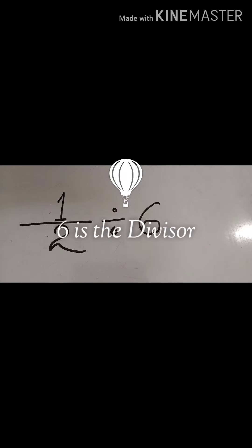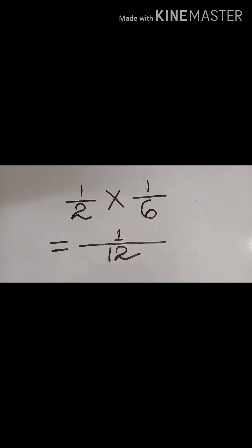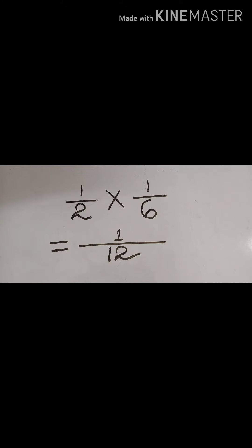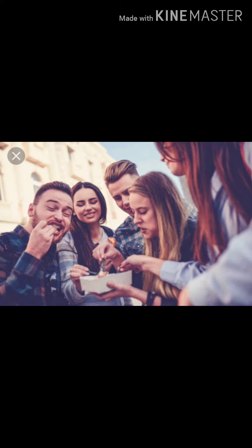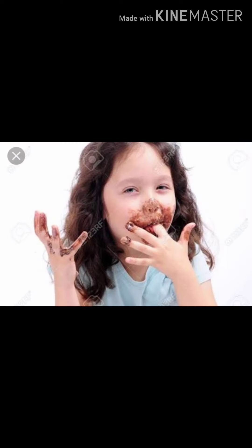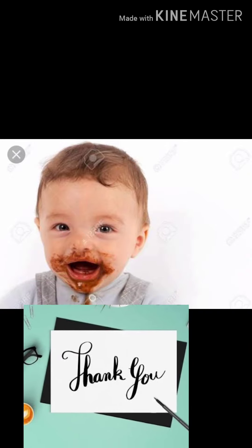So 6 is the divisor. Half divided by 6 is the same thing as half multiplied by 1/6 — the reciprocal of 6 is 1/6. The numerators multiply and the denominators multiply, giving us 1/12. We consider half divided by 6 equal to 1/12. From this we can say each friend will receive 1/12 of the chocolate. This is the procedure for division of a fraction by a whole number. Hope you have understood the concept. Thank you.